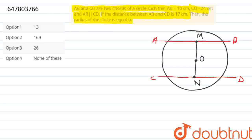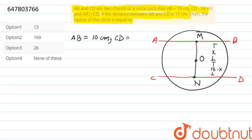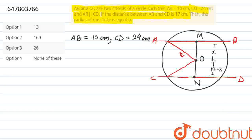Let this distance OM be X, so the other distance ON will be 17 minus X. Given that AB is equal to 10 cm and CD is equal to 24 cm. Now if we draw lines from the center O to the endpoints of each chord, those will be radius R — this will be radius R and this will also be radius R.